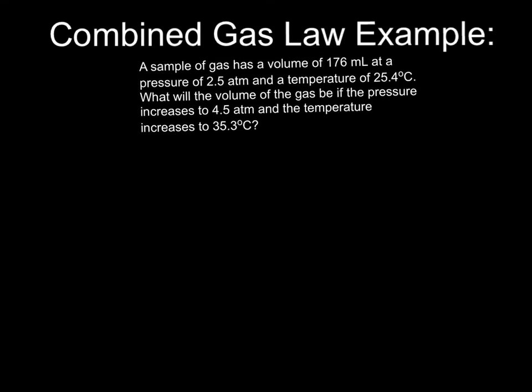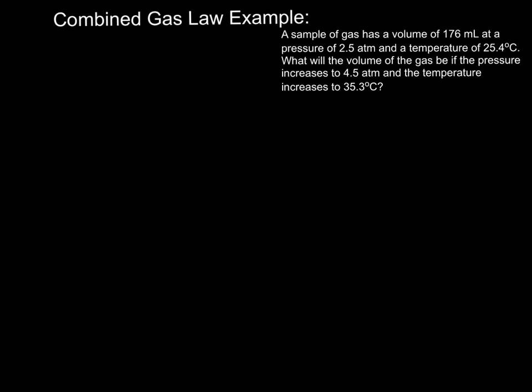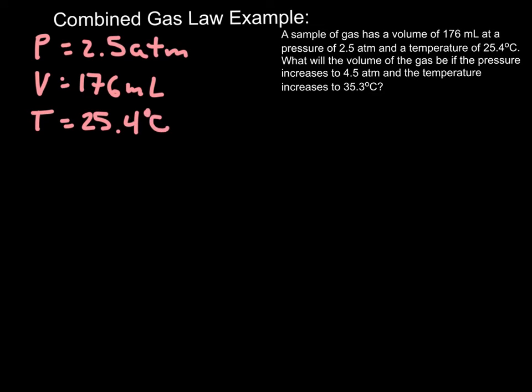I'm going to shrink the problem down now that you have written it down. And let's take a look and read it together while we create our list of variables. Here we have a sample of gas that has a volume of 176 milliliters, so V is equal to 176 mils. It's at a pressure of 2.5 atm and a temperature of 25.4 degrees C. It asks us what the volume will be. So now we know that everything's changing, so we're going to put a 1 on everything. What will the volume be? That's the second volume. If the pressure increases to 4.5 atm and the temperature increases to 35.3 degrees C.